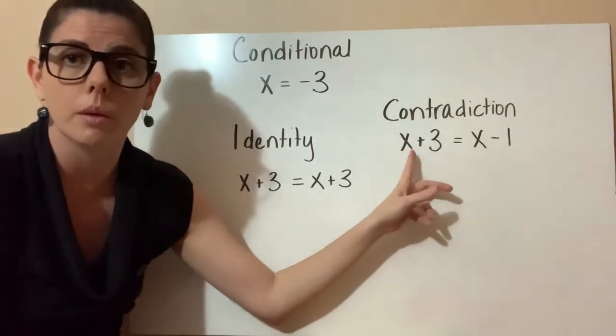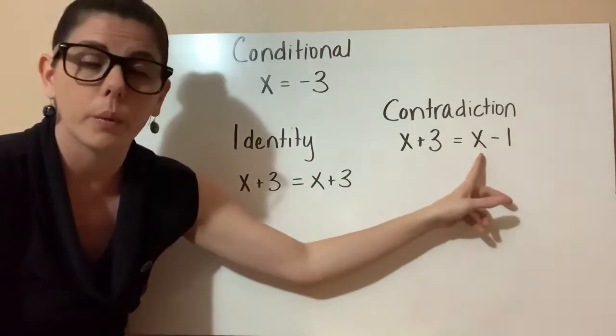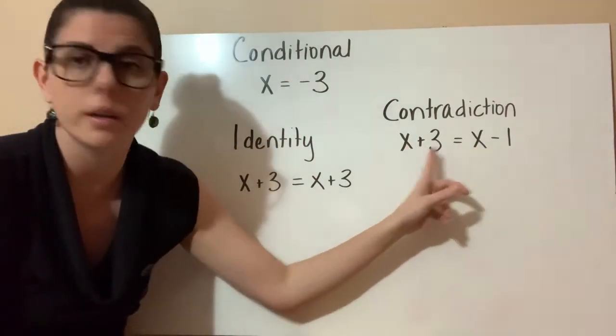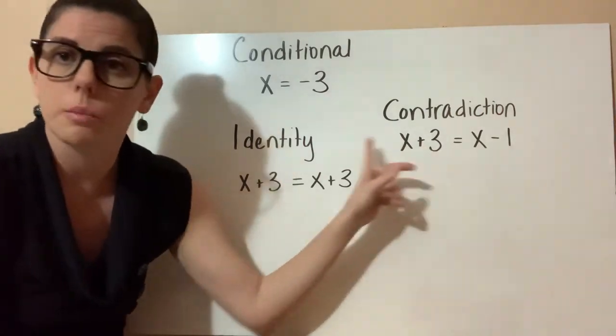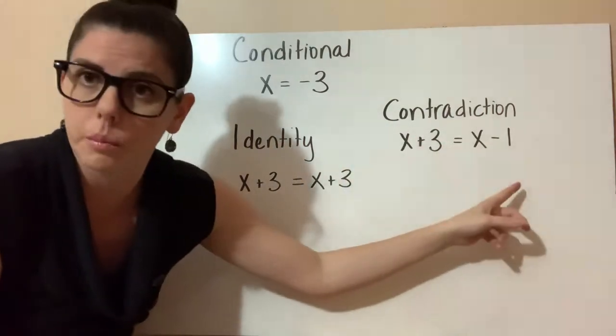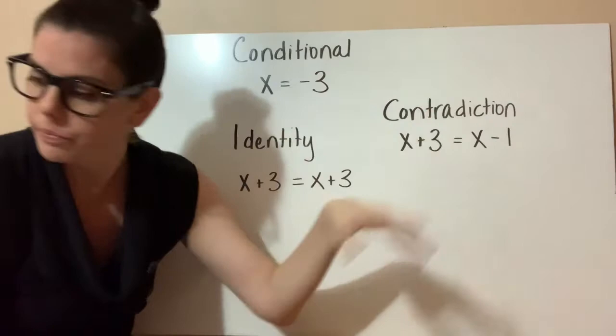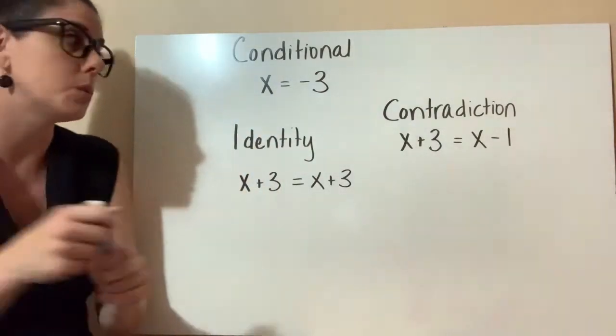But no matter what I put here, it'll never work here. So that's a contradiction equation. If I put 1 here, 1 plus 3 equals 4. If I put 1 here, 1 minus 1 equals 0. 4 does not equal 0. So no matter what I put, any real number I put there, it won't work. So let's go ahead and just work through these real briefly.